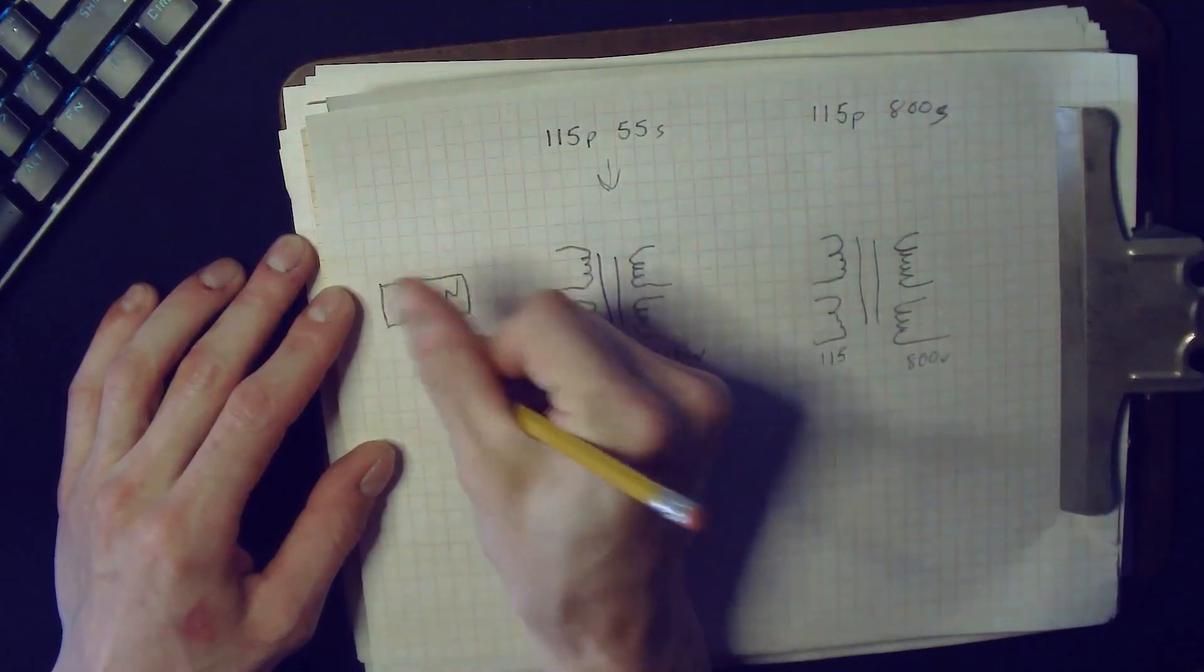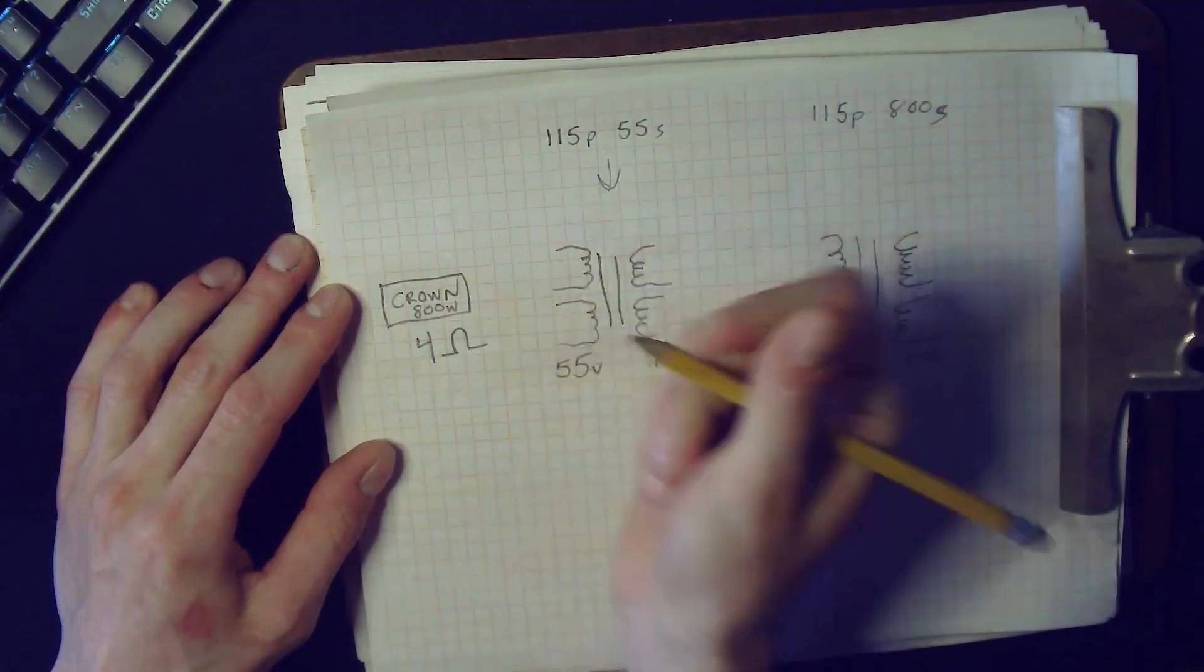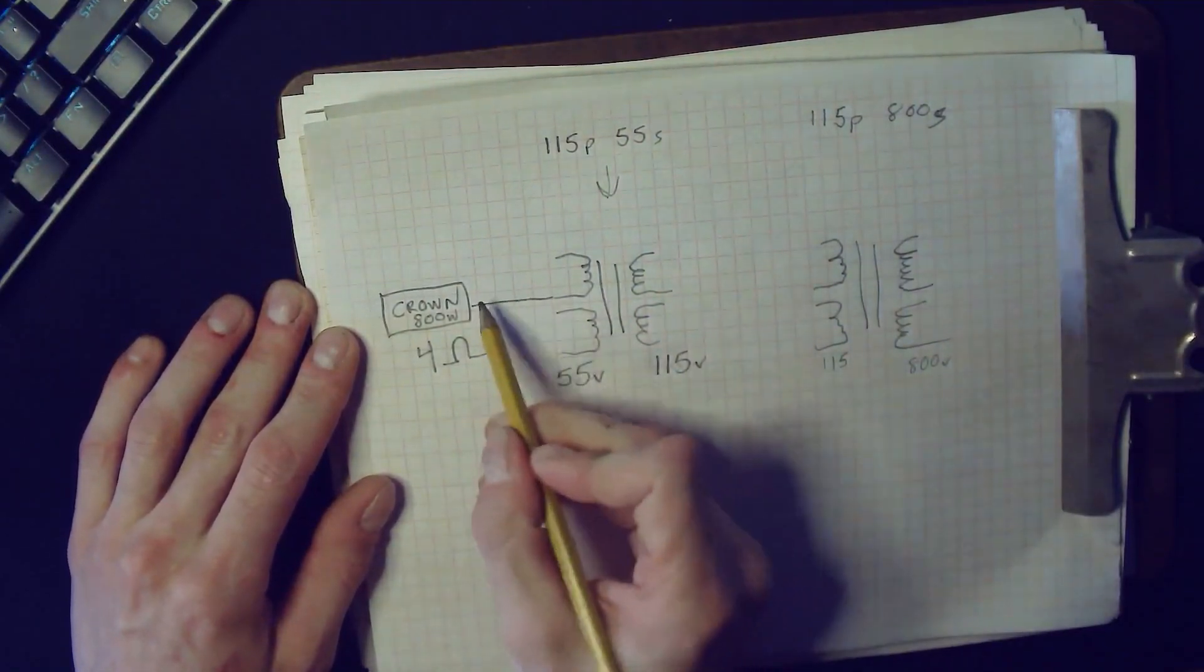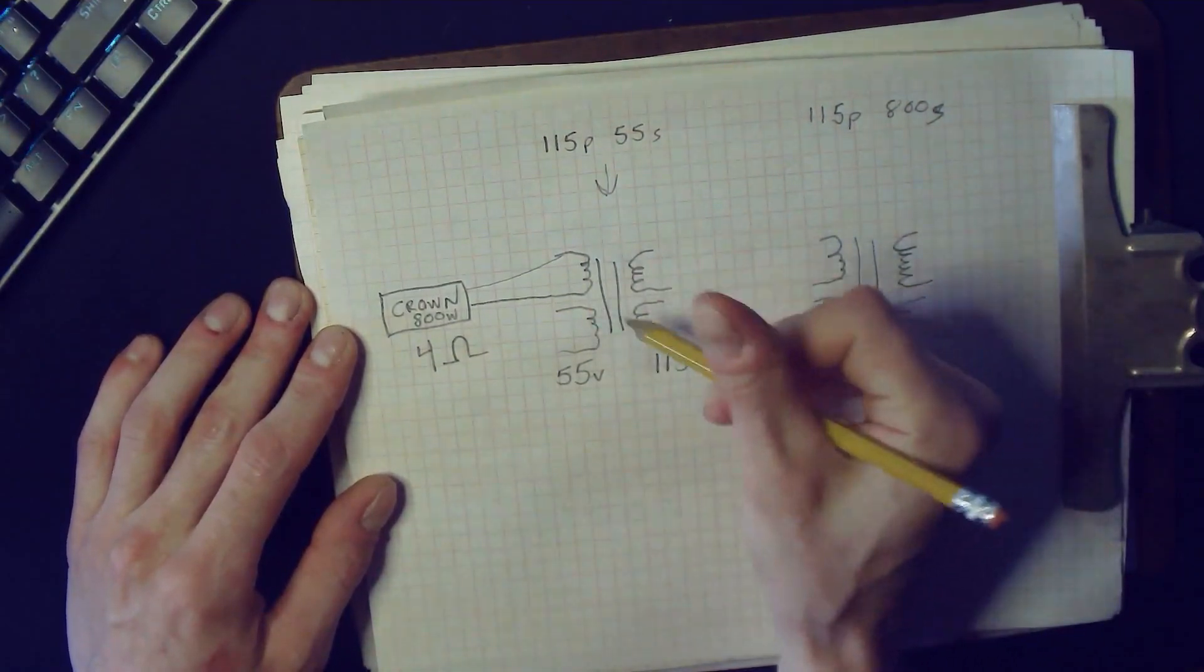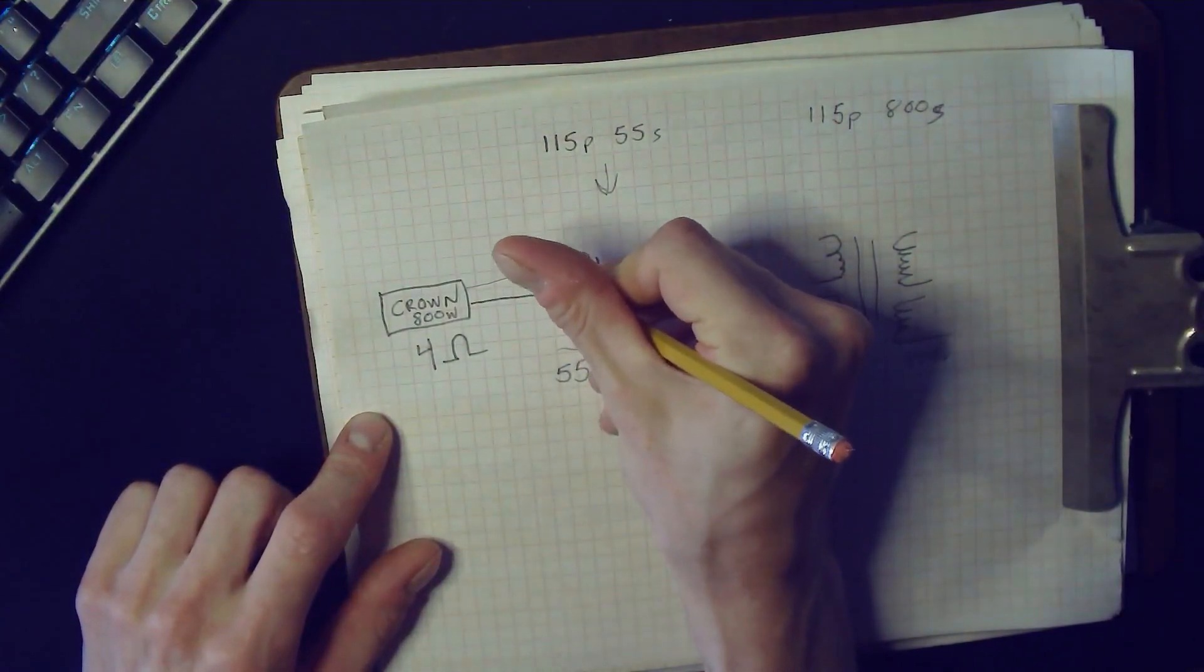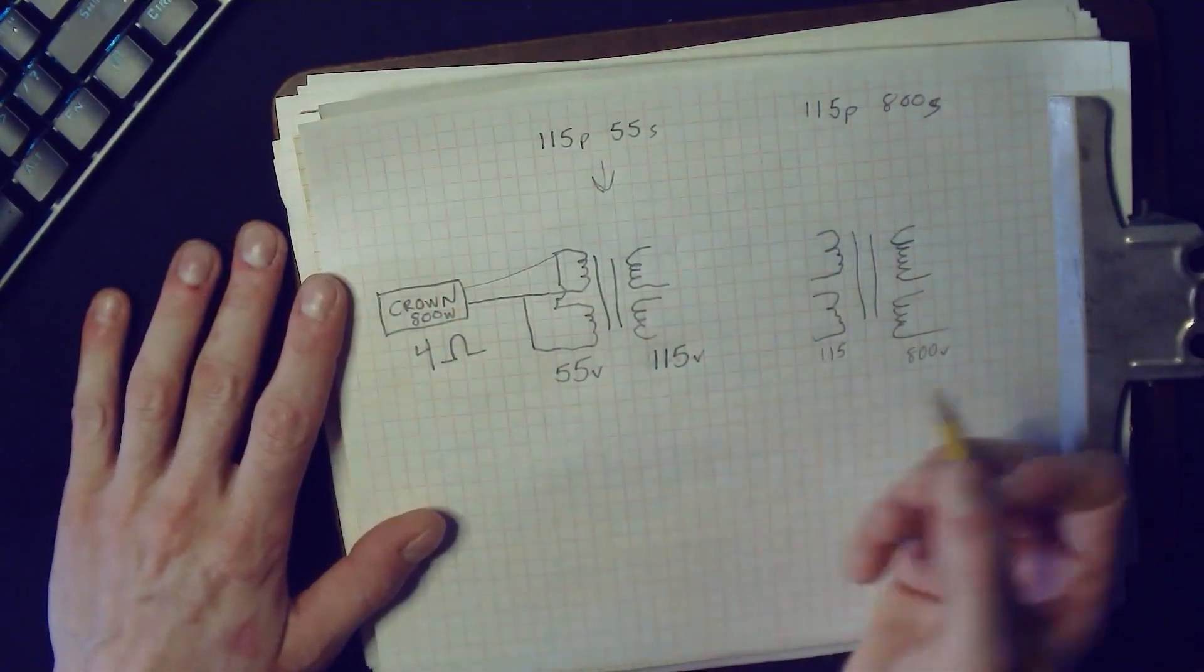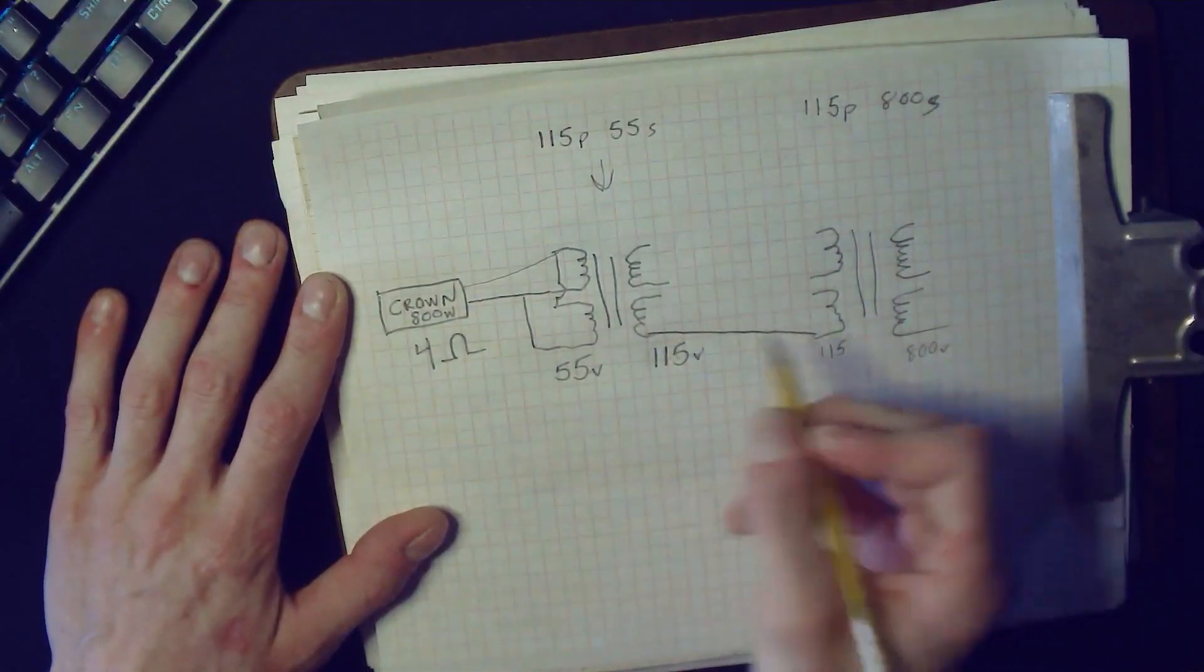Here's our Crown audio power amp with the 4 ohm output. That's about an 800 watt solid-state amplifier. The output of this is going to feed the 55 volt windings, which are actually the secondary but we're using as a primary. These are put in parallel.